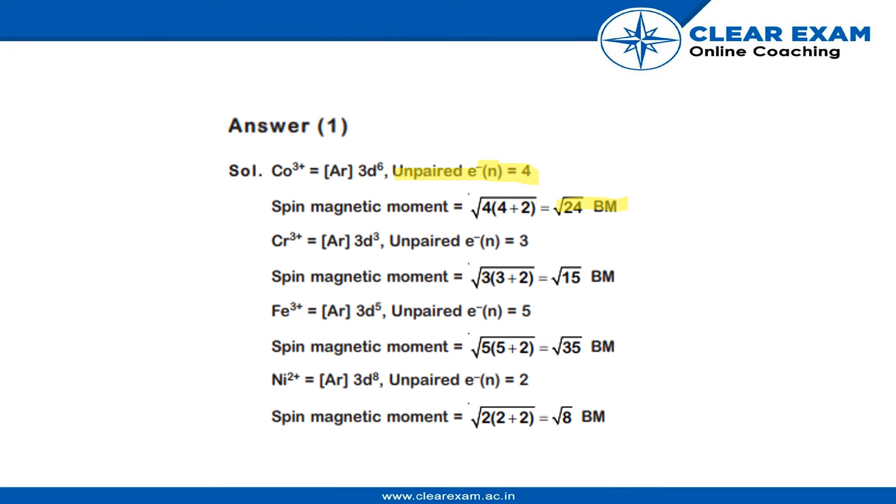Similarly, Cr3+ has 3d3 configuration and it has 3 unpaired electrons. As a result, its spin magnetic moment would be √(3×5) = √15 BM for Cr3+.